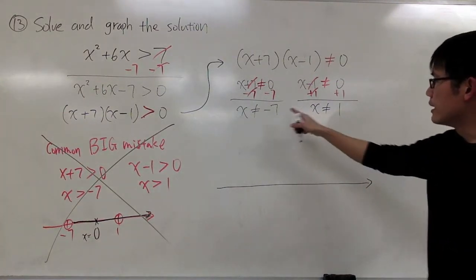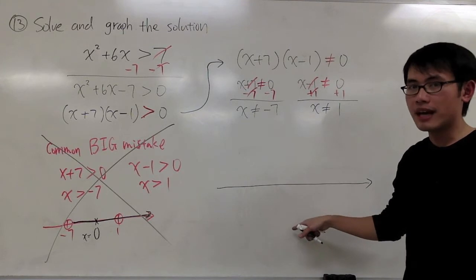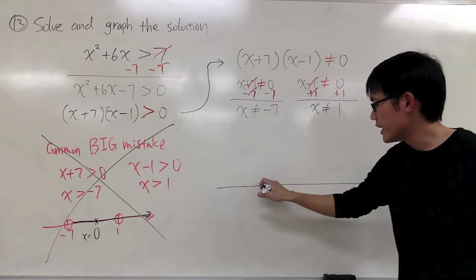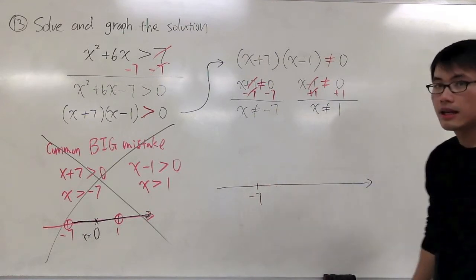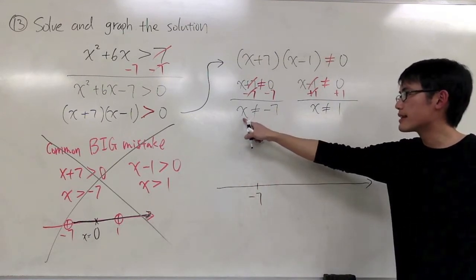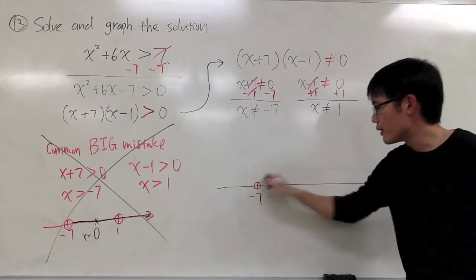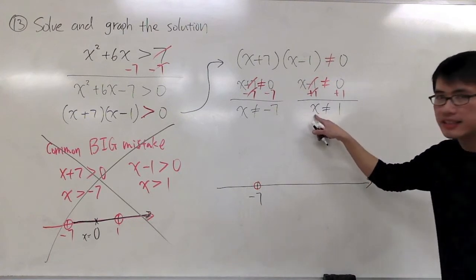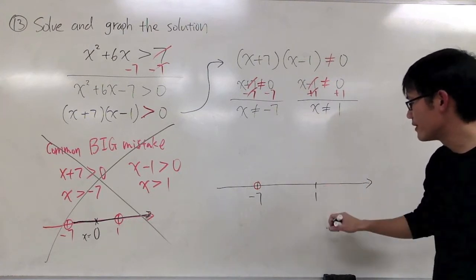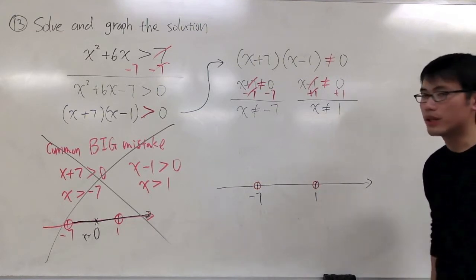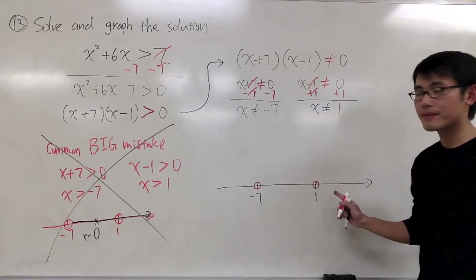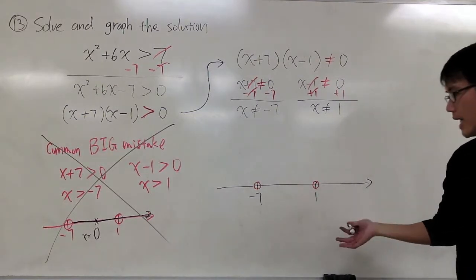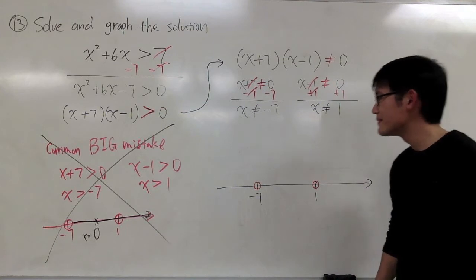I have two points, and let me label these two points on my number line. I said that x is not equal to negative 7. Let me put it at negative 7 right here. Since we don't want x to be negative 7, let me put an open circle on negative 7. Likewise, x is not equal to 1. Let's say 1 is right here. Once again, put an open circle right here. Let me just finish this up, and then I will put on some notes later.